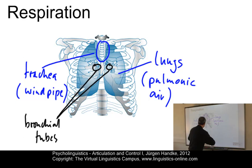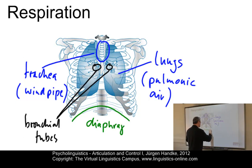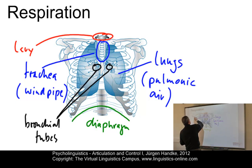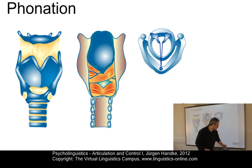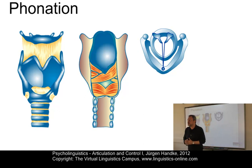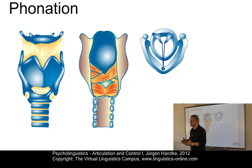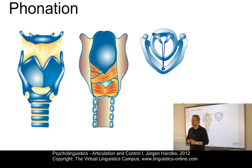At the lower end of the thoracic cavity, we find the dome-shaped diaphragm. And at the upper end, we find the larynx. The larynx is the main organ responsible for phonation. The primary biological function of the larynx is to act as a valve by closing off air from the lungs or preventing foreign substances from entering the trachea. The larynx consists of a number of cartilages which are interconnected by complex joints and which move about these joints by means of muscular and ligamental force.